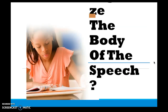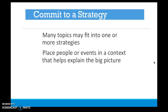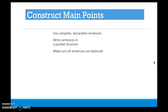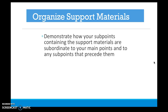We talked about organizing the body of a speech in week four, and now we'll go into more detail for the informative speech. Remember: chronological, spatial, topical, comparative, problem-solution, and causal. Knowing which strategies fit which types of informative speeches helps you choose. Commit to a strategy — pick the one best for your particular speech. Construct main points using complete declarative sentences, write in parallel structure, and make sure all sentences are balanced. Sub-points to the main points contain the supporting material; anticipate your audience's needs and don't assume they have all the knowledge.